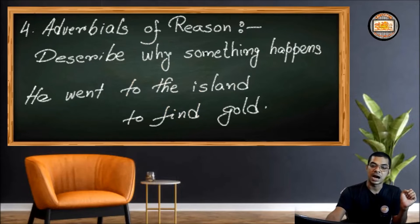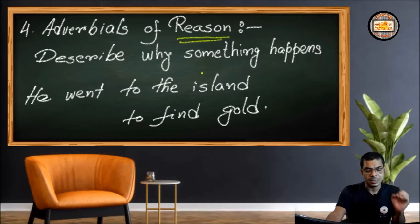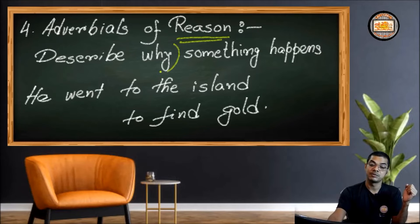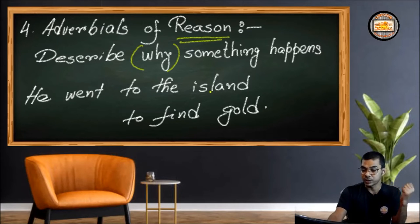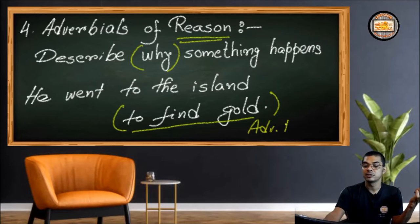The fourth type is adverbials of reason. Whenever I say adverbials of reason, it includes phrases as well as clauses. It describes why — why something happens. For example: 'He went to the island to find gold.' Obviously he had a reason to go there — to find gold. This particular infinitive phrase speaks of a reason, so this is an adverbial of reason.